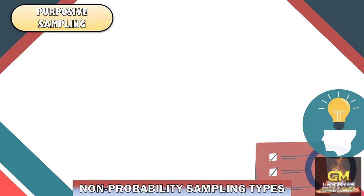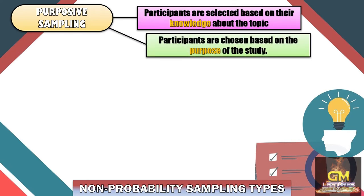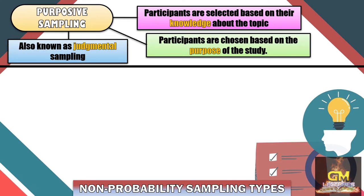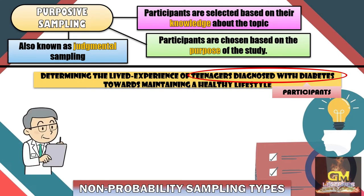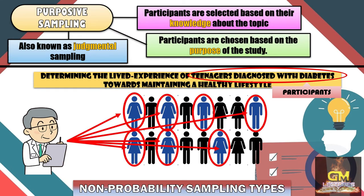Now we proceed to purposive sampling. In purposive sampling, participants are selected based on their knowledge about the topic, and they are chosen based on the purpose of the study. Purposive sampling is also known as judgmental sampling. For example, in a study that aims to determine the lived experience of teenagers diagnosed with diabetes towards maintaining a healthy lifestyle, we can identify that the participants are teenagers who are diagnosed with diabetes. As such, the researcher would then select from a group of people those who are teenagers diagnosed with diabetes, and interact with them in order to gather the needed data.